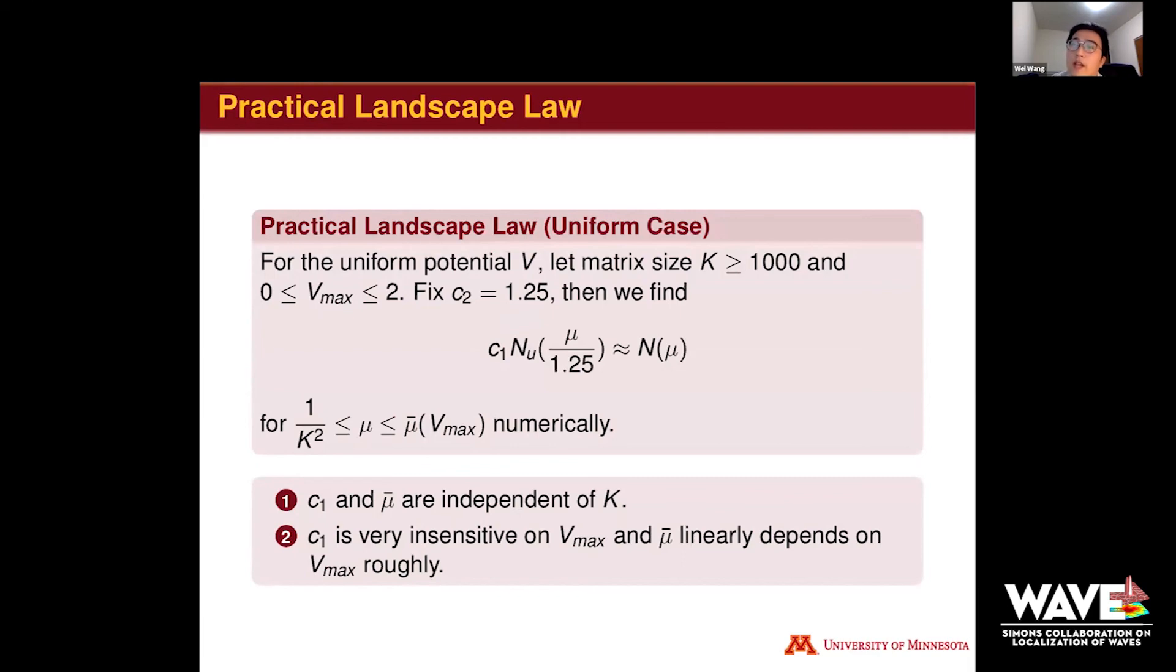We propose a practical landscape law based on the uniform case in the 1D tight-binding model. For uniform potential V with matrix size k greater than 1000 and V_max between 0 and 2, we fix the scaling constant c2 by 1.25. We find that c1 times N_u(μ) over 1.25 approximates the true counting N_μ very closely numerically. Additionally, c1 and μ_bar are quite independent of the matrix size k, and c1 is very insensitive to V_max, but μ_bar is not. The current results show that μ_bar linearly depends on V_max roughly.